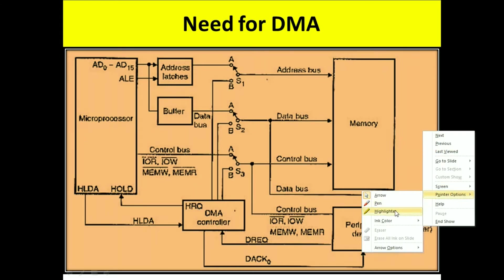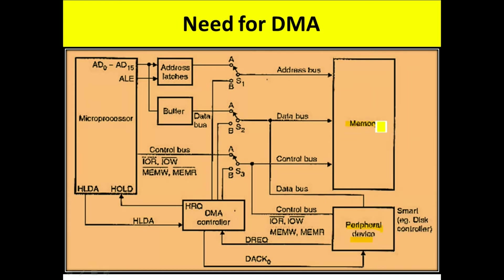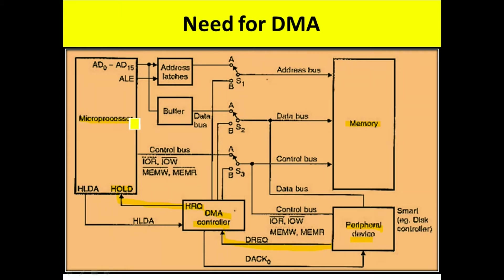Here we have a peripheral device and a memory. When this peripheral device wants to access this memory directly, it first sends a DMA request to the DMA controller. When the DMA controller receives that signal from the peripheral device, it sends a hold request signal to the 8086 microprocessor through the hold pin. When the processor receives this signal, it completes the current bus cycle.